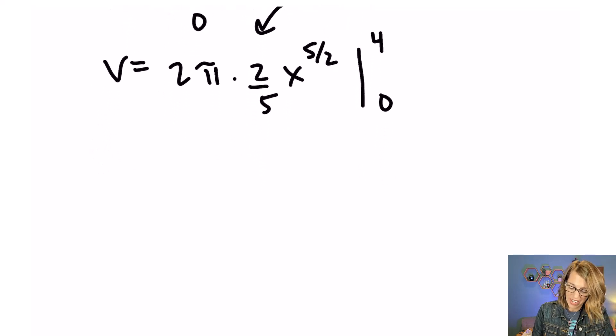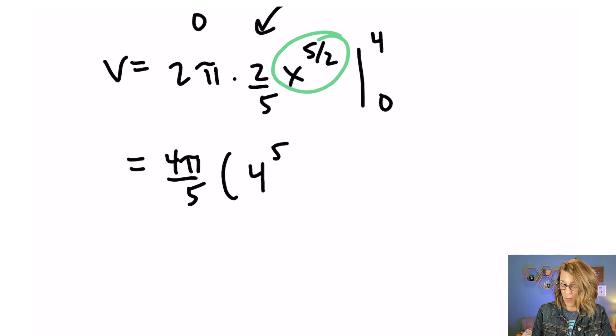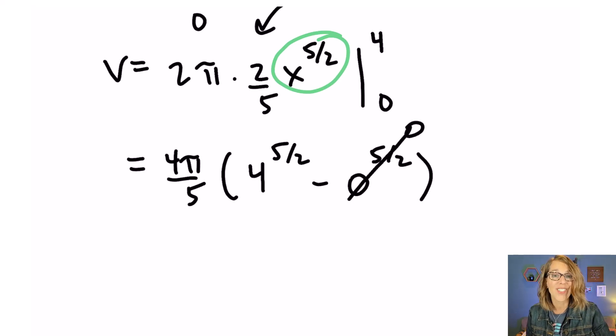Simplifying what we've got, we end up with 4π/5 out in front. And then I need to take that anti-derivative and evaluate it at 4 and at 0. So 4^(5/2) minus 0^(5/2). But you gotta love 0s. That just goes away. And I really only need to worry about 4^(5/2).